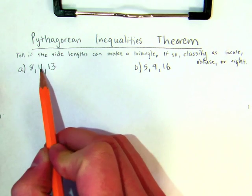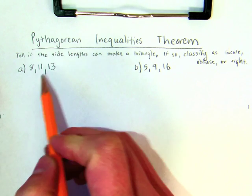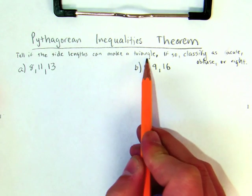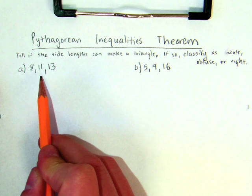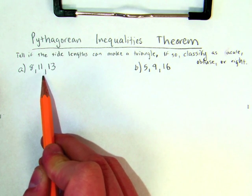So I'm given three potential side lengths, and I have to determine whether they can make a triangle, and if they can, is that a right triangle, an acute triangle, or an obtuse triangle?